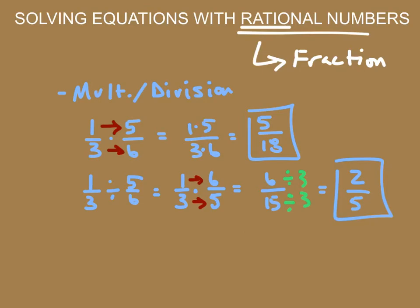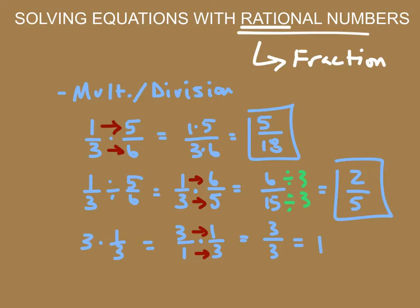Now I want to talk about this example. If I were to take the number three and multiply it by one-third, I would rewrite three as three over one times one over three. When I multiply these, I get three times one over one times three, which is three over three. Three divided by three is simply one. This is very important because we're going to use this concept to help us solve equations with rational numbers.